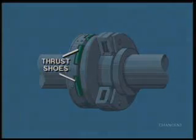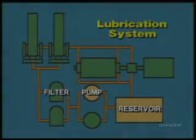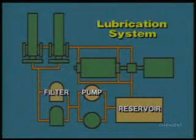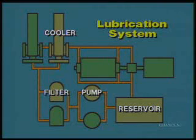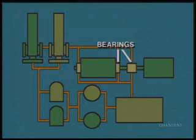A typical thrust bearing has a thrust collar attached to the shaft and thrust shoes arranged in a circular bearing case. Oil is pumped from the reservoir through a filter to a cooler, where it is cooled to the correct operating temperature. This cooled, clean oil then flows under pressure to each bearing through holes and grooves.